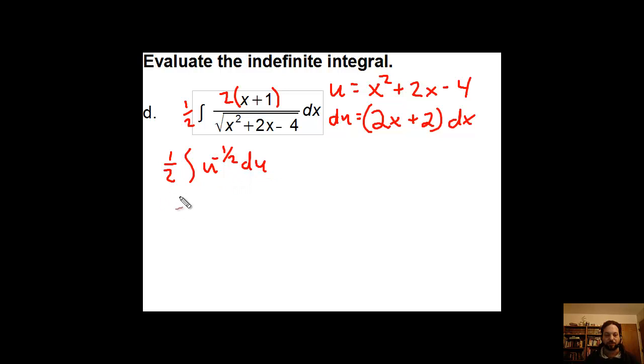I have another one of these one half integral of u to the negative one half du, just like the first example, very similar. If I want to integrate that, it's just going to be one half u to the positive one half over one half plus c. These one halfs, just like in the first problem, they are going to cancel. What I'm left with is simply u to the one half, which I'm going to rewrite as the square root of x squared plus 2x minus 4 plus c.